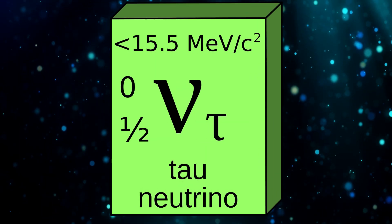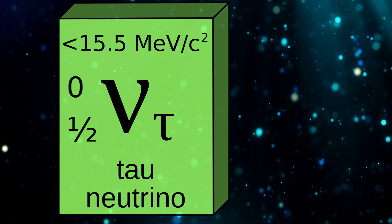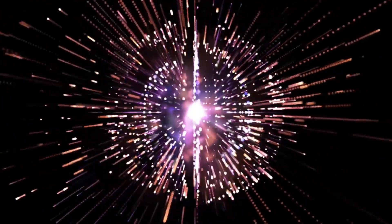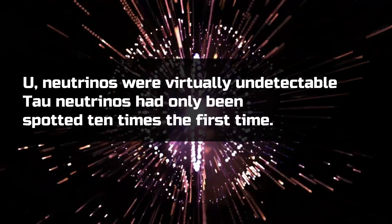Recall that we mentioned three varieties of neutrinos. Tau neutrinos are the rarest and most challenging to detect. In fact, before the advent of FASER nu, neutrinos were virtually undetectable.